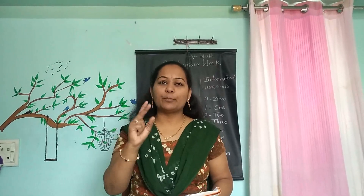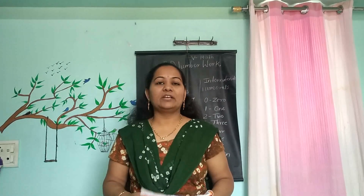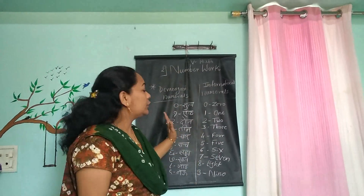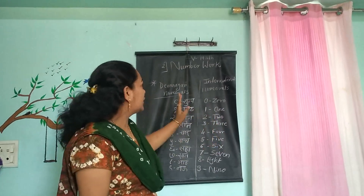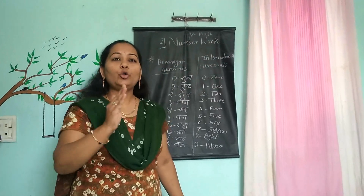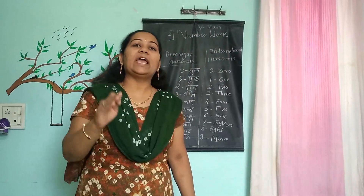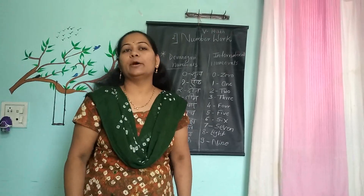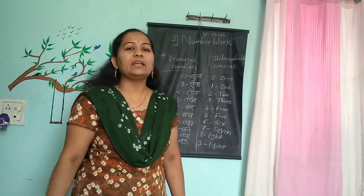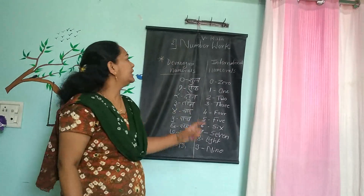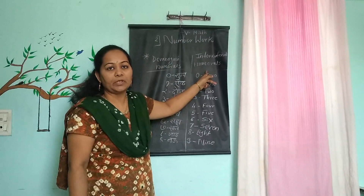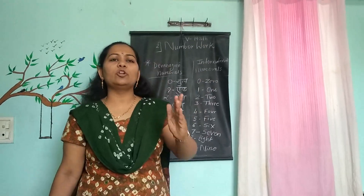Lesson number 2 is the number system, which is the basic heart of maths. You can give a look at the blackboard. I wrote here 2 columns which show us basic numerals 0 to 9. With the help of these basic numerals 0 to 9, it is possible to prepare any mathematical number, and these numbers can be read in Devanagari numerals as well as in international numerals. These numbers are also possible to write in words.